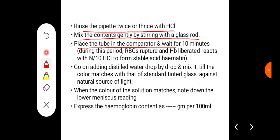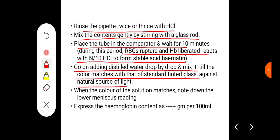Mix the contents gently by stirring with the glass rod. Place the tube in the comparator and wait for 10 minutes. During this period, RBCs rupture and hemoglobin liberated reacts with N/10 HCl to form stable acid hematin. Then go on adding distilled water drop by drop and mix it till the color matches with that of standard tinted glass against a natural source of light. When the color of the solution matches, note down the lower meniscus reading. Express the hemoglobin content as grams per 100 ml of blood.